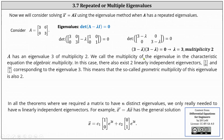We call the multiplicity of the eigenvalue in the characteristic equation the algebraic multiplicity. In this case, there also exist two linearly independent eigenvectors — the vectors (1, 0) and (0, 1) — corresponding to the eigenvalue of three. This means the geometric multiplicity of the eigenvalue is also two.